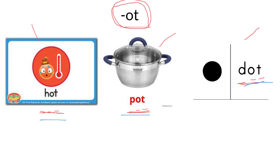These are the ot word family, or we can call them rhyming words. Hot, pot, dot. Can you think of other words that rhyme with hot, pot, dot? Name them for me please. Well done everybody.